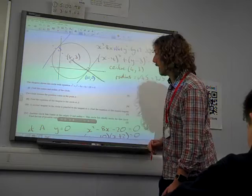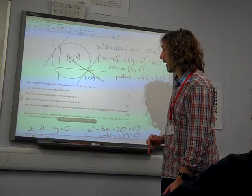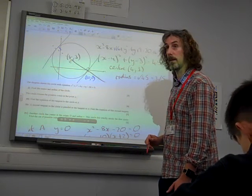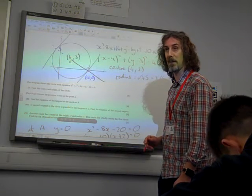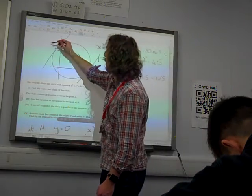So, C must be the point minus 2, 9. I've just added 6 both times. Hang on. Minus 2, 6. I'm happy with that.